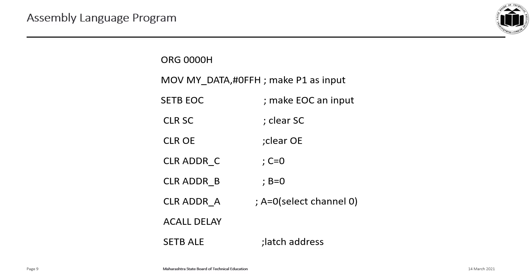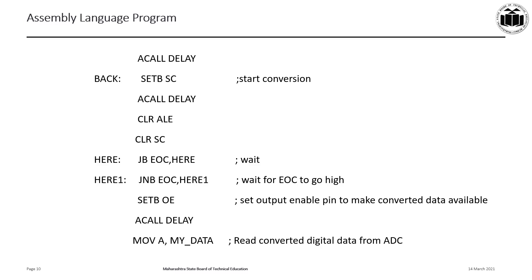After some delay, the ALE pin is set high, so the address gets latched. Then, after another delay, the SC signal — which was previously cleared — is now set. SET SC starts the conversion. After some time, CLR ALE and CLR SC clear those pins, giving a pulse to the SC and ALE pins. Once conversion has started, we wait until it completes using JB EOC, here — which jumps back to the same line as long as the EOC bit is high, effectively waiting for the end of conversion.